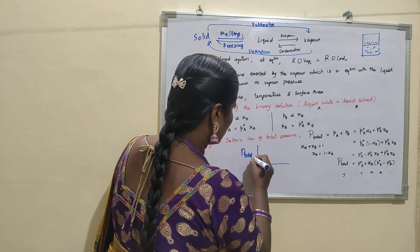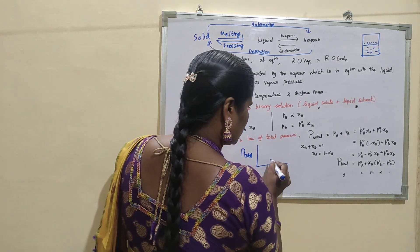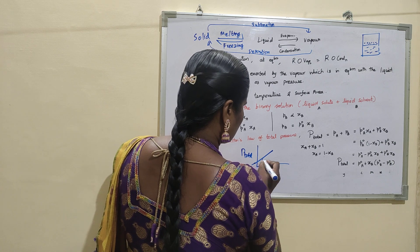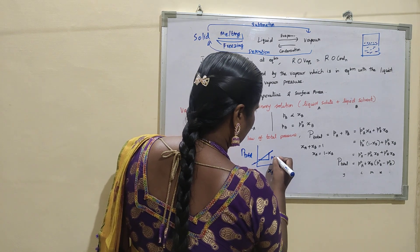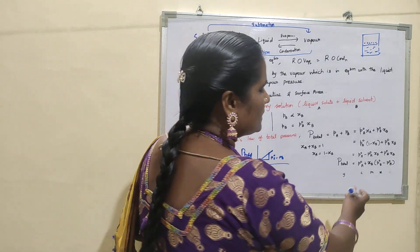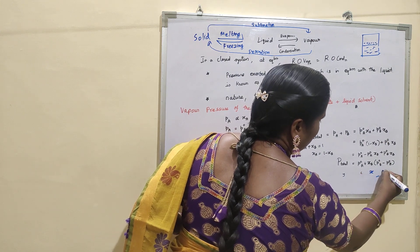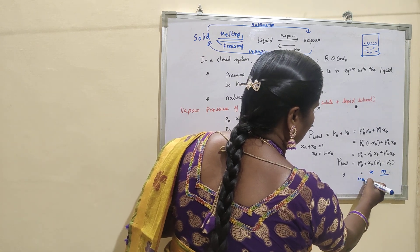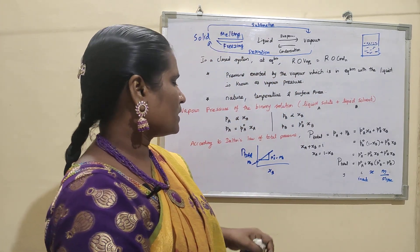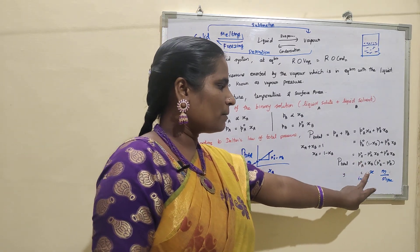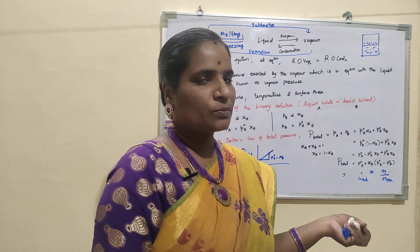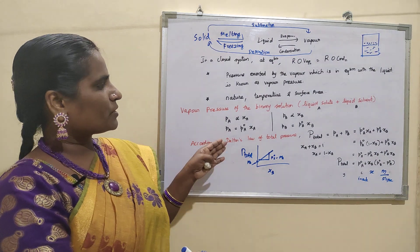Plotting X_B on the X-axis and P_total on the Y-axis, we get a straight-line graph. The slope is (P°_B − P°_A) and the intercept is P°_A. From this equation, we can see that for a liquid-liquid binary solution, the total pressure depends on the difference between the pure component partial pressures and the pure component vapor pressure of A, along with the mole fraction X_B.